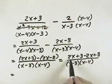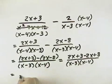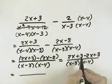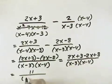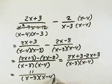Here we can see that the 2x and the minus 2x cancel, are equal 0, and 3 plus 8 is 11. So it's 11 over our common denominator of x minus 3 times x minus 4 as our simplified solution.